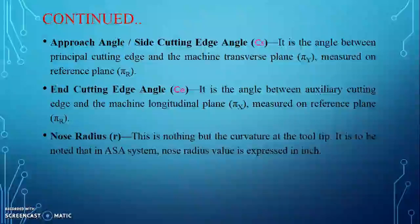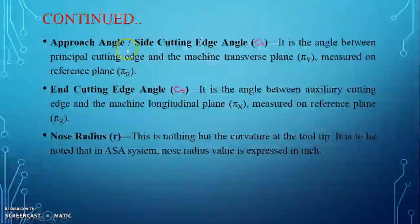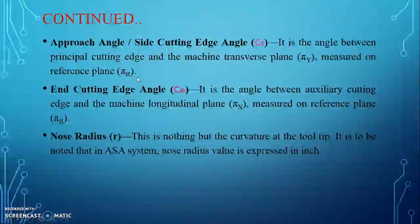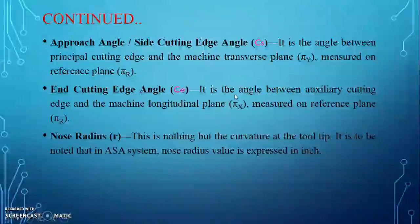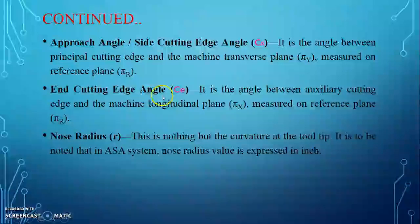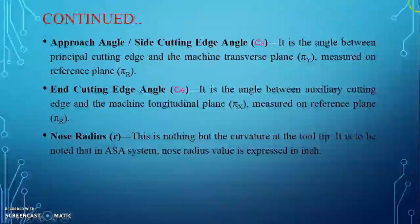The approach angle or side cutting edge angle, denoted CS in the figure, is formed by the side cutting edge as it approaches the workpiece. It is the angle between the principal cutting edge and the machine transverse plane phi-Y, measured in the reference plane phi-R. The end cutting edge angle, denoted CE, provides relief so that the cutting edge does not contact the already-machined workpiece. It is the angle between the auxiliary cutting edge and the machine longitudinal plane phi-X, measured on the reference plane phi-R.